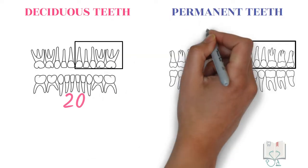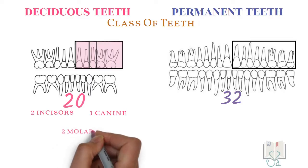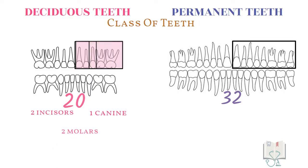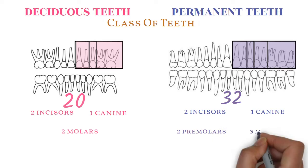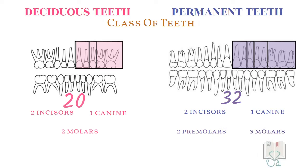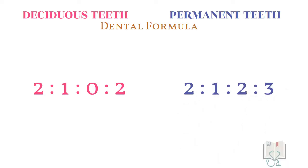If we look at their classes, in deciduous dentition there are two incisors, one canine, and two molars, whereas in permanent teeth there are two incisors, one canine, two premolars, and three molars. Because of this, the dental formula of the two dentitions is also different.